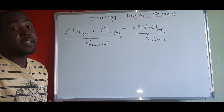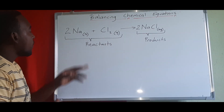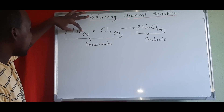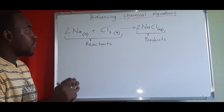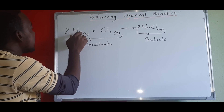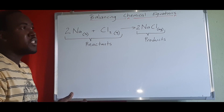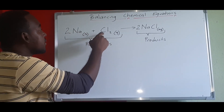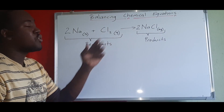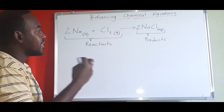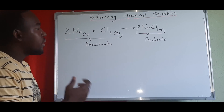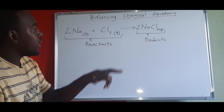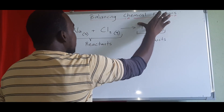In balancing equations we use numbers in front of the compound or element to balance the left and right sides together. All metals exist as just their symbol alone — so if it's magnesium it's Mg. But gaseous elements exist as a molecule, which is two of the same atom. So if it's chlorine it's Cl₂, oxygen is O₂, hydrogen is H₂ — these are elemental gases and they exist as the symbol with a subscript 2.